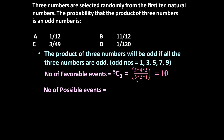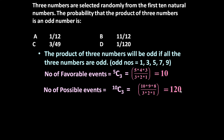Number of possible events: there are 10 natural numbers and we have to select 3, which is equal to 10C3 = (10 × 9 × 8) / (3 × 2 × 1) = 120. So number of favorable events is 10 and total number of possible events is 120.